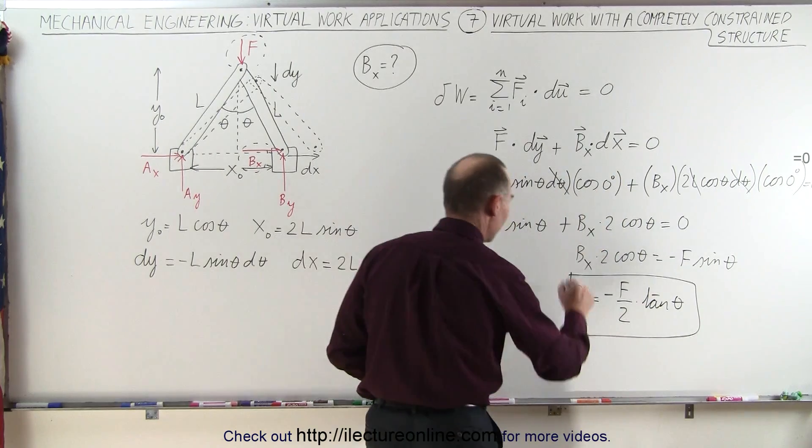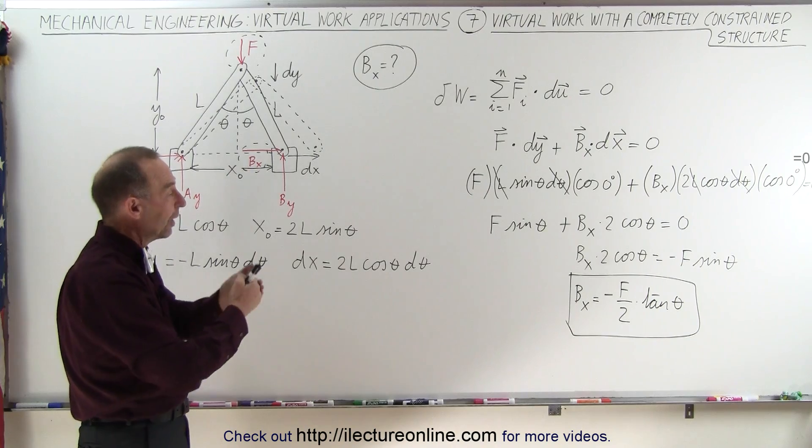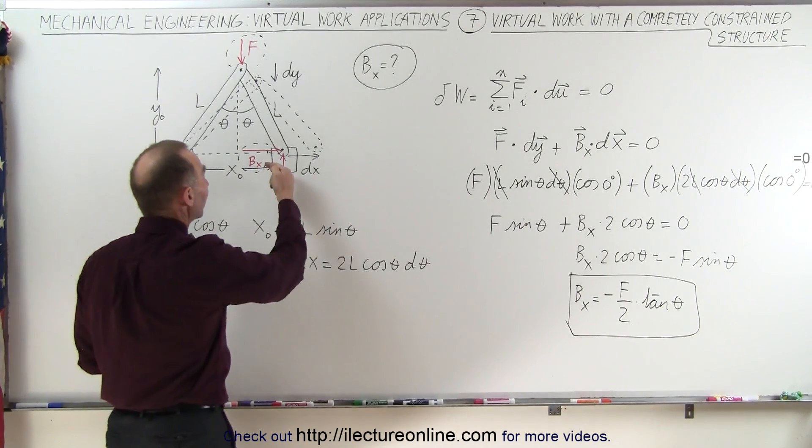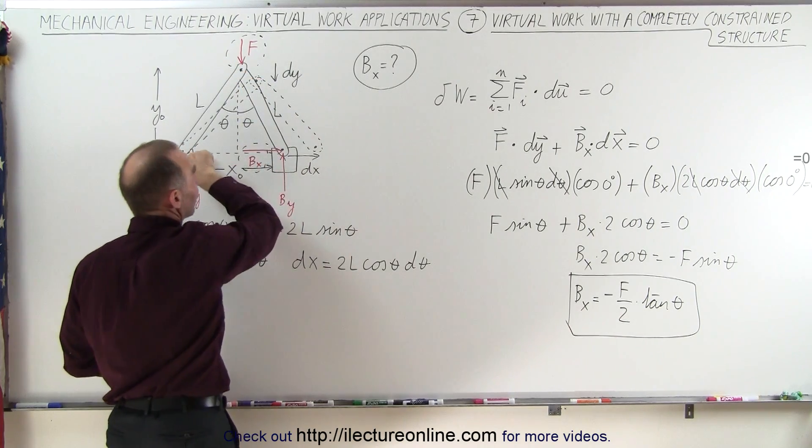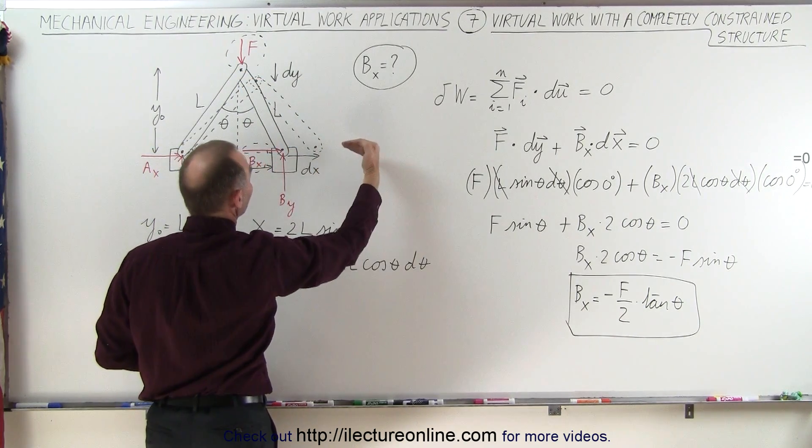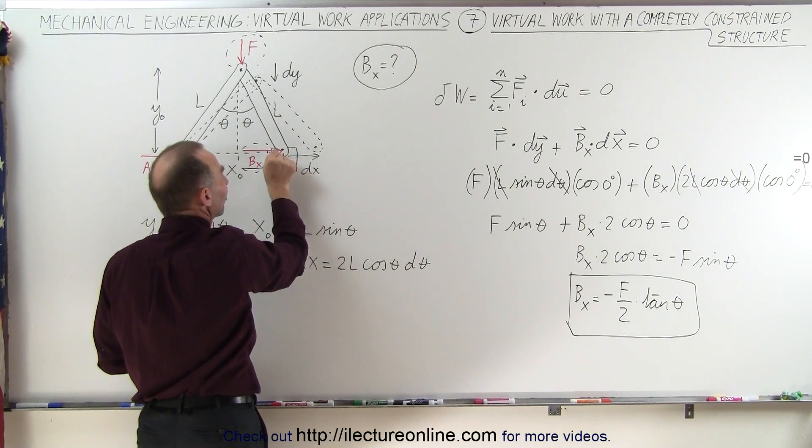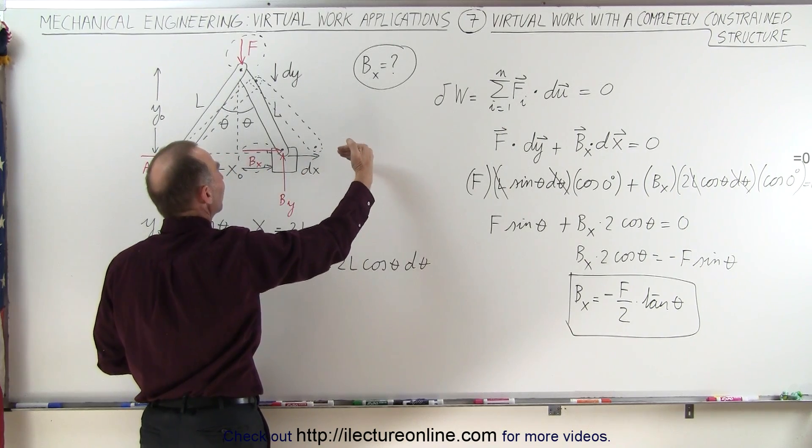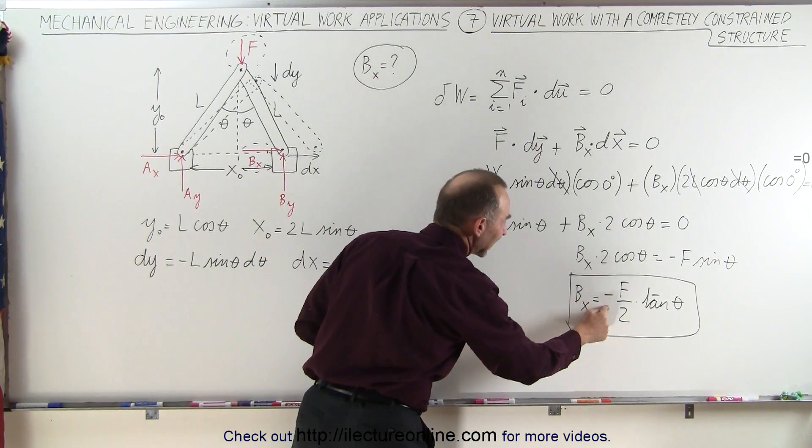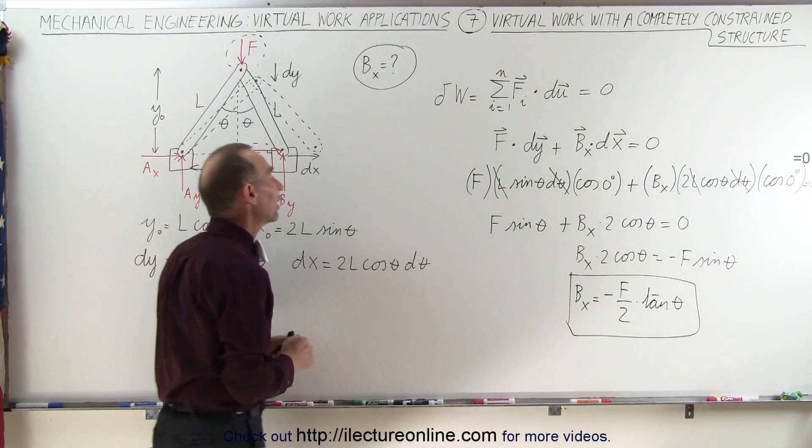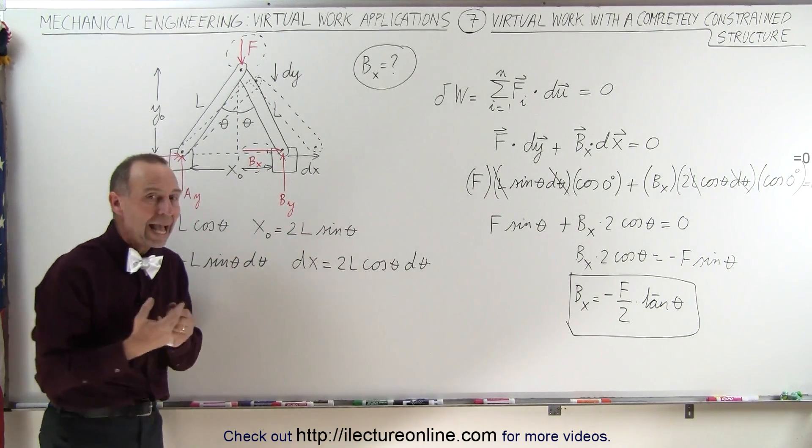And this is the force B sub X. Now, it's negative. The reason why it's negative is because B sub X is actually acting in the opposite direction. If I push down on F, then this member will try to slide to the right, and the force B sub X will act to the left to keep it from going to the right, so therefore B sub X is negative F over two times the tangent of theta, indicating that the way I've drawn it here is in the opposite direction from the way it actually acts.